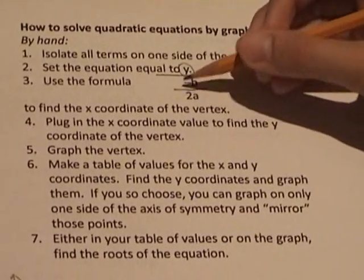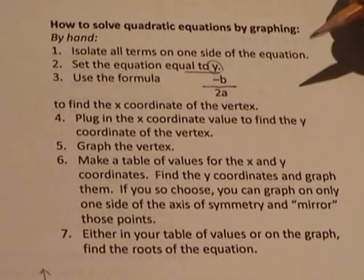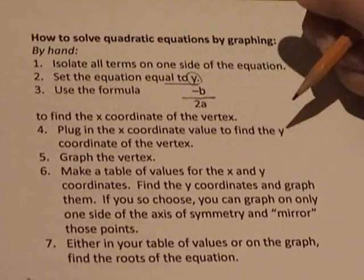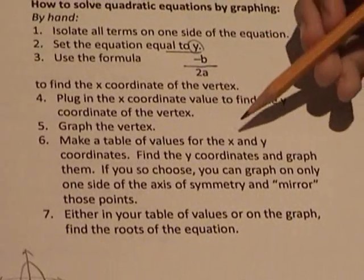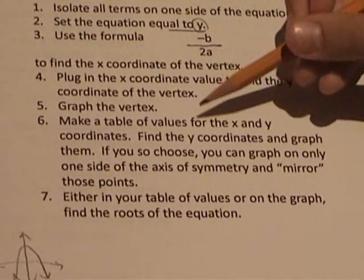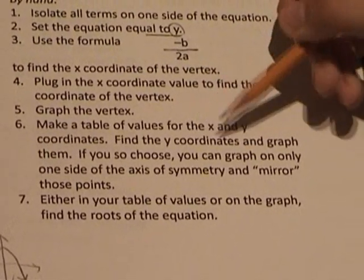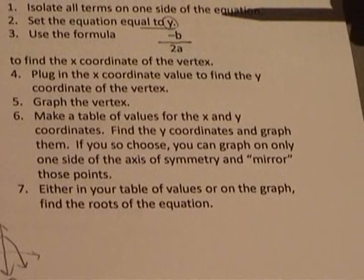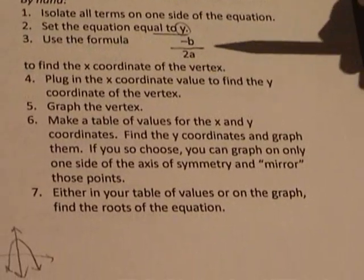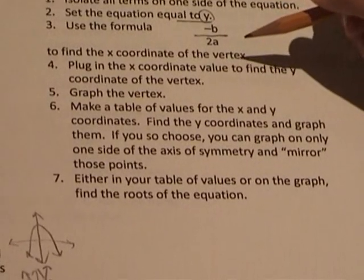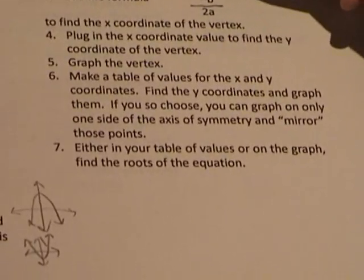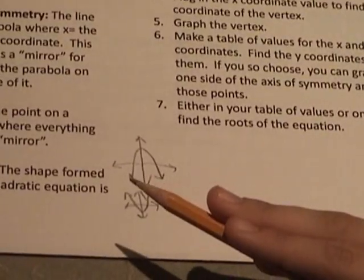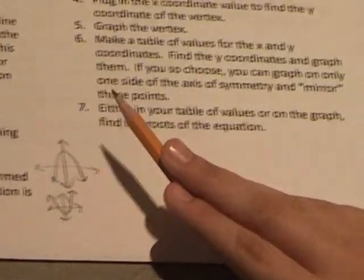Then, after you've found the value of this, plug it into your original equation to find the y-coordinate of the vertex. Then, graph the vertex. Make a table of x values for x and y-coordinates that are equidistant from the axis of symmetry. Then, plug the x-coordinates into the equation and graph the corresponding points. If you want to, you can just plug in stuff from one side of the axis of symmetry and then mirror it.